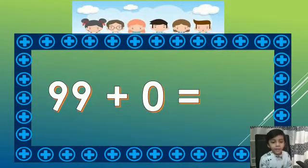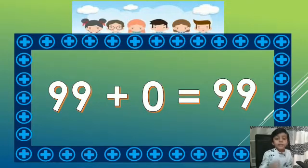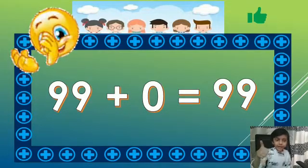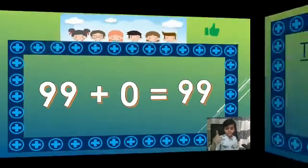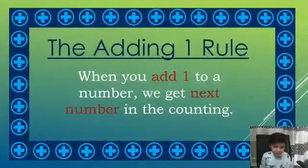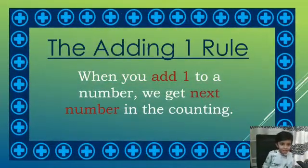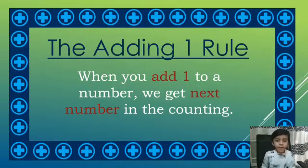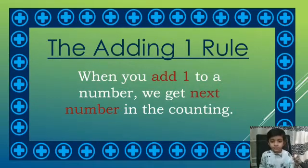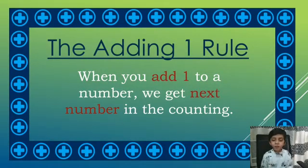99 plus 0 equals 99. That's correct! Here we will learn the adding 1 rule. When you add 1 to a number, we get the next number in the counting.